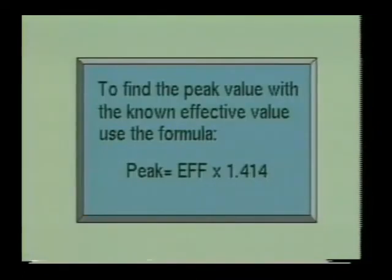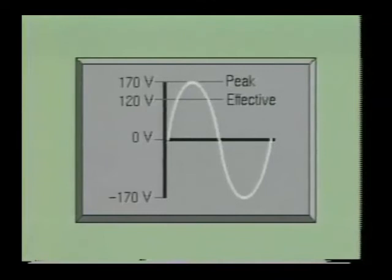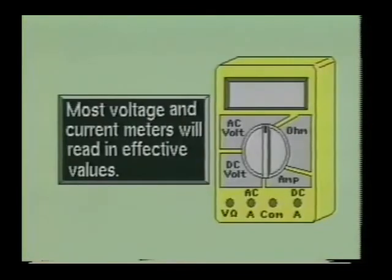If you know the effective value of a wave and you need to calculate for the peak value, you simply multiply the effective value times 1.414. The 120 volts in your home is actually a sine wave voltage with an effective value of 120 volts. The peak value of this voltage is actually 169.68 volts. All AC voltmeters and current meters will read effective values unless otherwise stated. When we speak of an AC voltage or current, we mean its effective value.